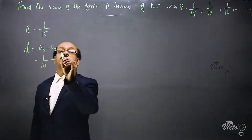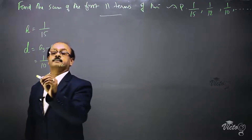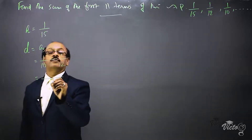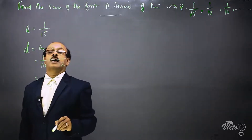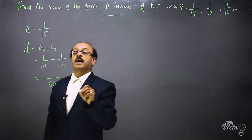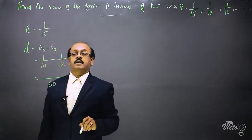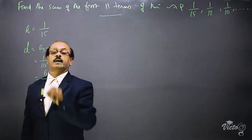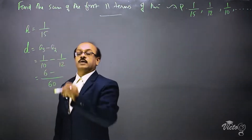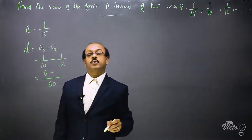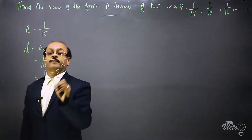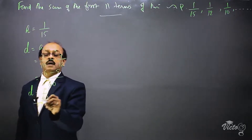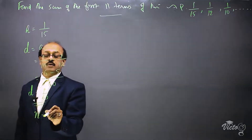Minus 1/12. The LCM of 10 and 12 is 60. We multiply: 10 into 6 gives 60, so we also multiply the numerator by 6; minus 12 into 5 gives 60, so we multiply the numerator by 5. That gives 6 minus 5, so the common difference d is equal to 1/60. And n is equal to 11.